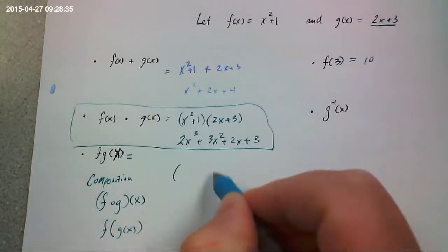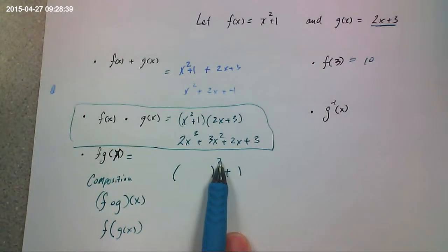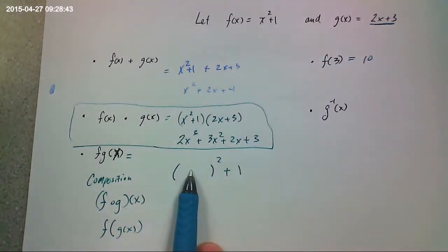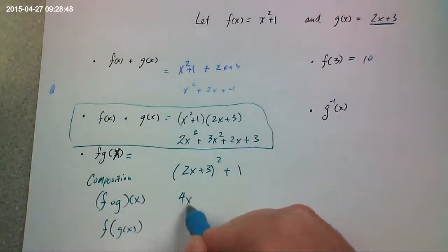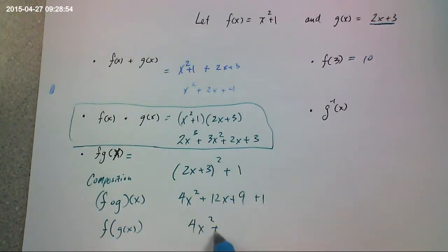What you're doing is everywhere for the function f, everywhere you see an x, you're going to replace that x with the entire function of g. This would be, instead of x squared plus 1, we're going to have the function g placed right there. That's going to be 2x plus 3. That's 4x squared plus 12x plus 9 plus 1. There you go.